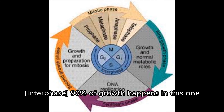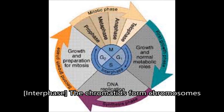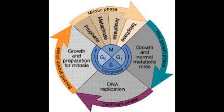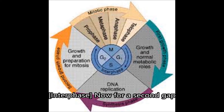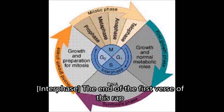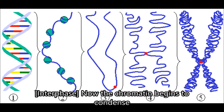Versus G1, it is real fun. 90% of growth happens in this one. Then the S phase for replication of DNA. The chromatids form chromosomes, you know what I'm saying? Now for a second gap. Cell begins to grow again. Now the chromatid begins to condense. Is all of this starting to make sense?